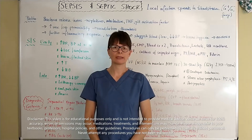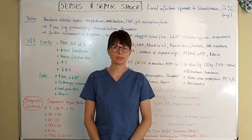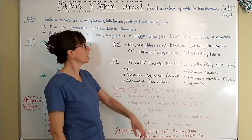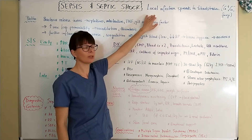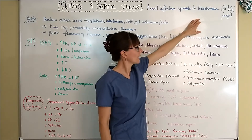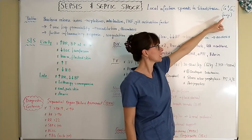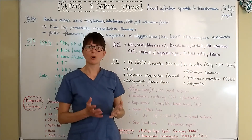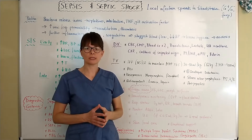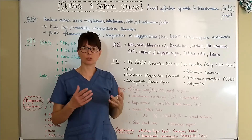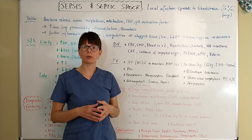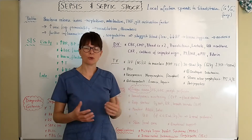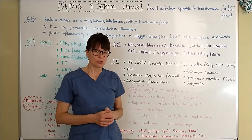Welcome to Nursing School Explained and this video on sepsis and septic shock. Sepsis usually occurs from a local infection that can occur anywhere in the body that spreads into the bloodstream. The causative organisms can be gram-positive as well as gram-negative bacteria, but also fungi. Most of the time the source originates from either the respiratory or the urinary system — so this could be a common cough and cold that turns into pneumonia, or a UTI or kidney infection that spreads from the urinary tract into the bloodstream.